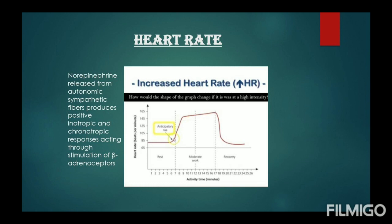Heart rate increases during physical activity when our sympathetic nervous system is activated. The frequency of heart rate increases directly, and the increase in heart rate is directly proportional to increasing exercise intensity — up to some extent. After reaching an optimum level, it goes to a plateau.